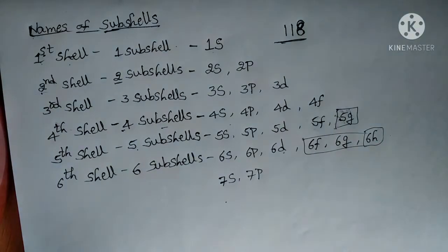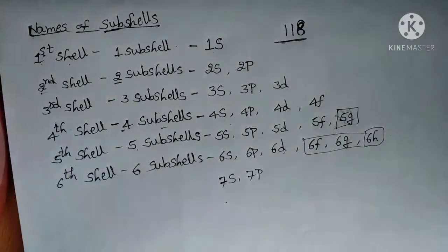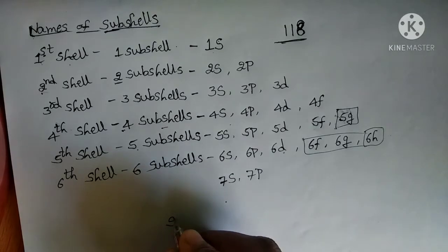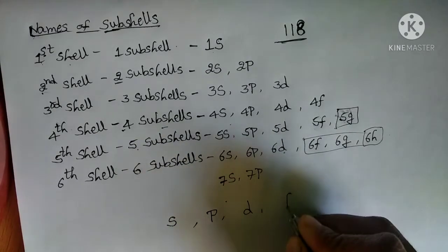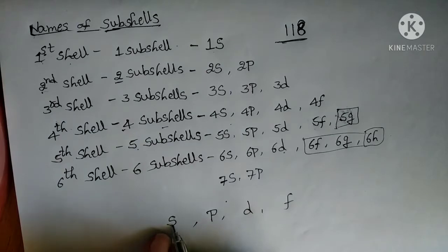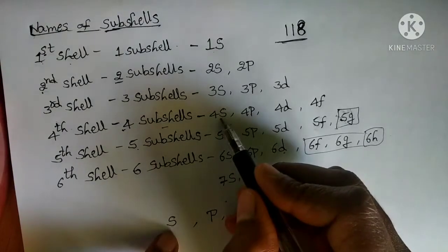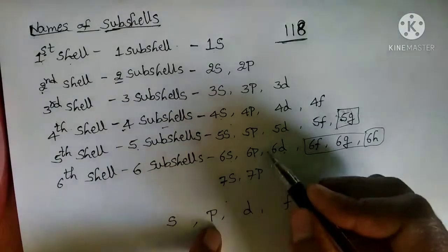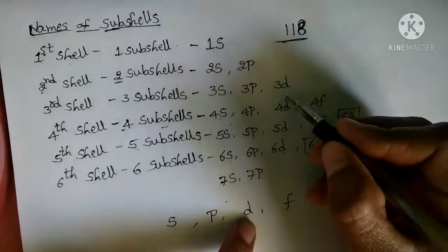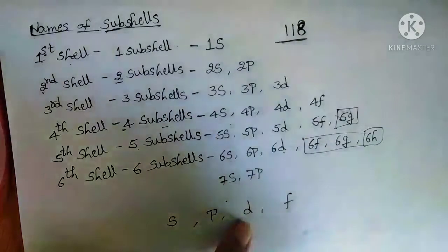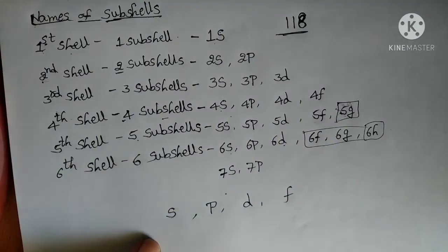Commonly, if you observe what subshells are present across all shells, we can say: s subshell, p subshell, d subshell, and f subshell. If the s subshell is present in the sixth shell we call it 6s; if in the fourth shell, 4s. Similarly, if p is in the fifth shell it is 5p, and if d is in the third shell it is 3d.